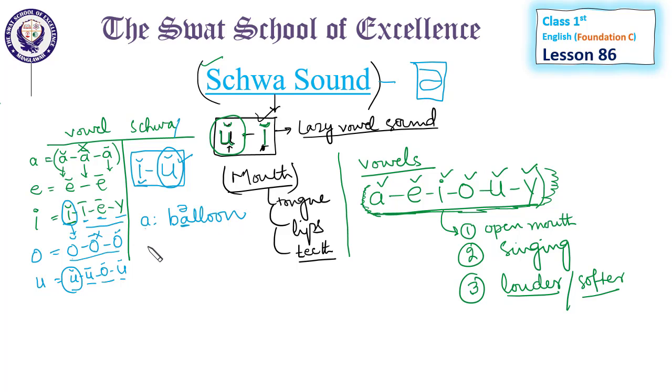For example, the word 'problem.' In 'problem,' the second syllable 'blem' - the 'e' makes two sounds, the 'e' and schwa sound together. So 'problem' uses the schwa sound.